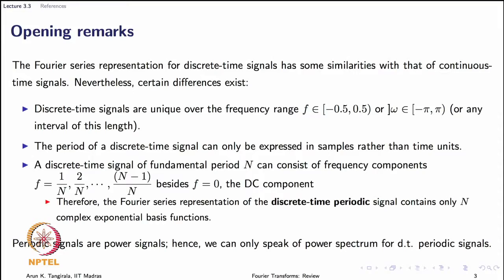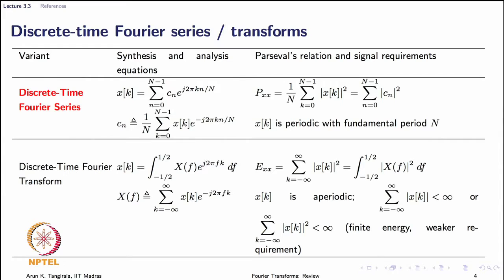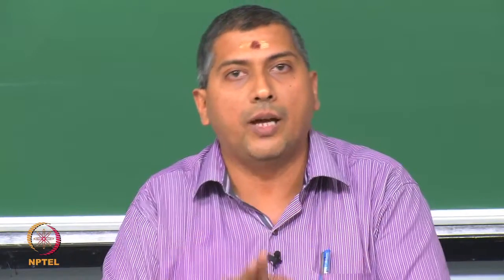The main message is that the Fourier representation of a discrete time periodic signal will include only a finite number of harmonics, not infinite harmonics. That makes life easier in many ways. Since we are dealing with periodic signals, we talk about power and power spectrum, but not power spectral density, because we are only looking at a discrete set of frequencies. In the synthesis equation shown, we have a finite summation, and the index n runs from 0 to N minus 1, spanning the entire fundamental frequency range from minus 0.5 to 0.5 in cyclic frequency.